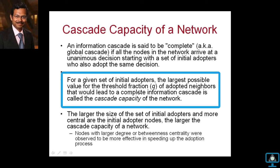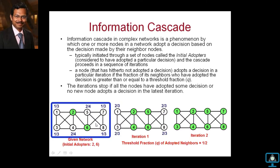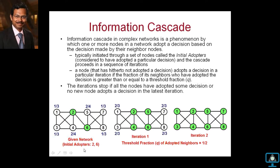For a given set of initial adopters, the largest possible value for threshold fraction Q that can still lead to a complete information cascade is called the cascade capacity of the network. In prior research, people have studied how to choose initial adopters, and centrality metrics have been very useful. Nodes chosen based on either degree centrality or betweenness centrality were observed to be more effective in speeding up the adoption process. In this research, I'll be using both.